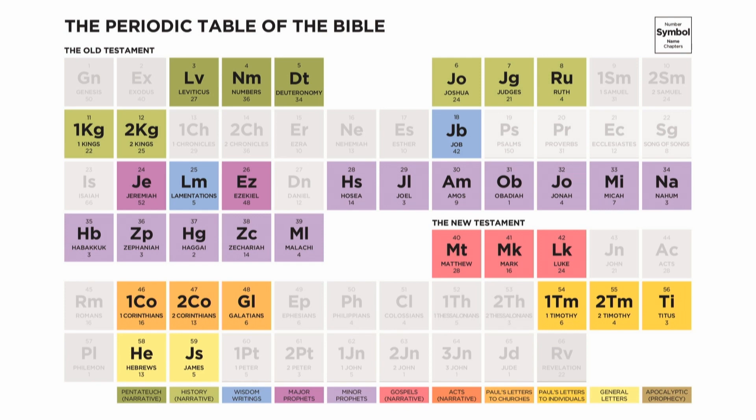We're going to check off 1 Timothy, 2 Timothy, and Titus. And when we get those done — we did John already, so I don't know if I'll get through all three of those Gospels more, but we did a Gospel. And then we only have five more books of the New Testament, and we're going to have completed the New Testament. That's an amazing thing to think about.